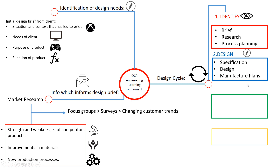Manufacturing planning is where you do your production plans, planning out how you're going to make your design. 'Optimize' is where we look into modelling and prototyping. There are good reasons to prototype first: it's cost effective, we can see if the design works, see how it functions, and if anything needs to be changed, we save money at that stage.